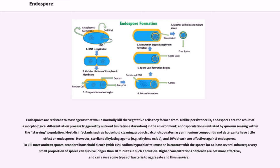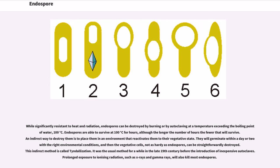While significantly resistant to heat and radiation, endospores can be destroyed by burning or by autoclaving at a temperature exceeding the boiling point of water, 100 degrees Celsius. Endospores are able to survive at 100 degrees Celsius for hours, although the longer the number of hours the fewer that will survive.